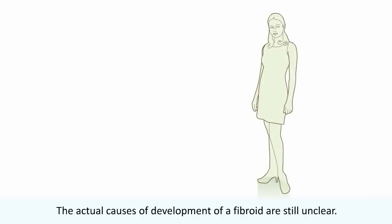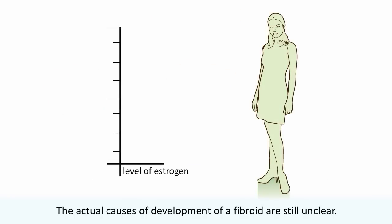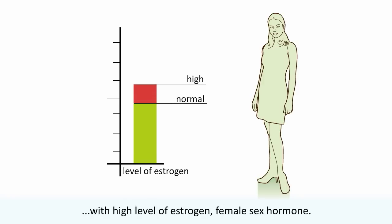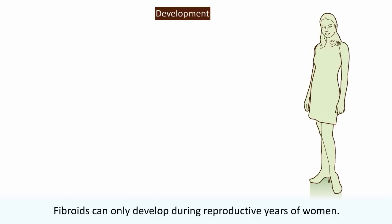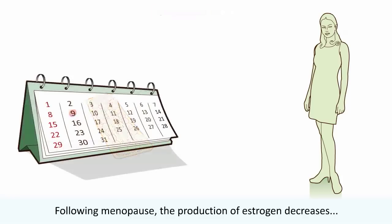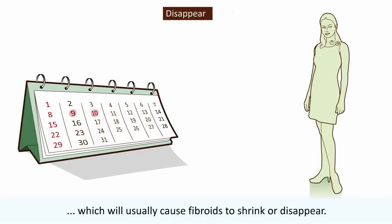The actual causes of development of a fibroid are still unclear. However, it has been documented that fibroids are associated with high levels of oestrogen, the female sex hormone. Fibroids can only develop during the reproductive years of women. Following menopause, the production of oestrogen decreases, which will usually cause fibroids to shrink or disappear.